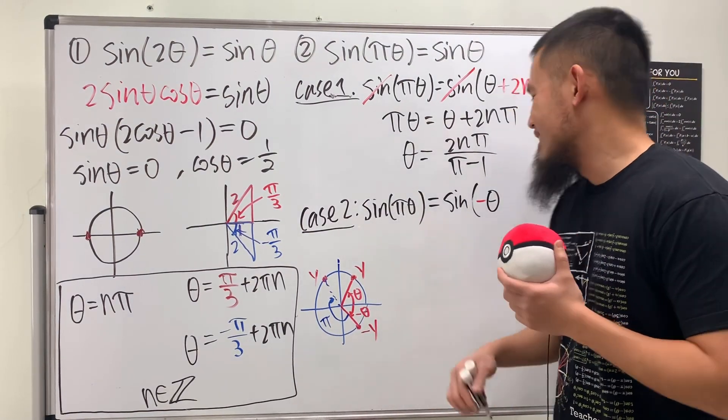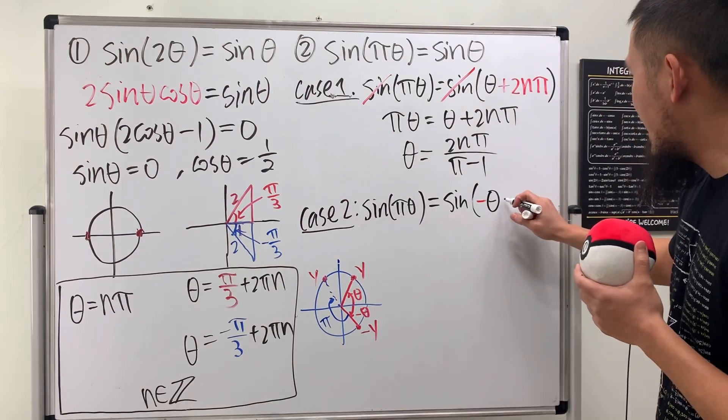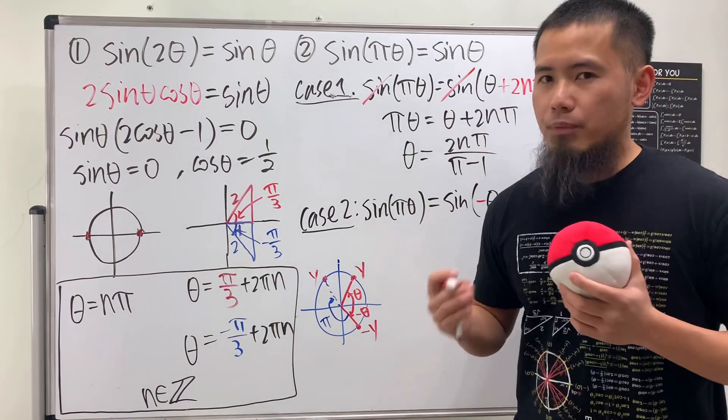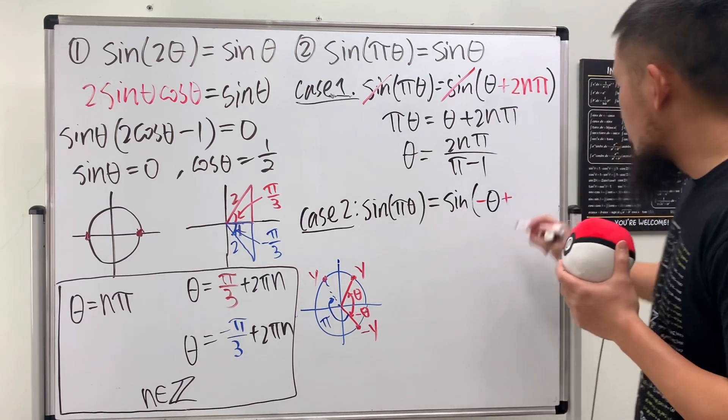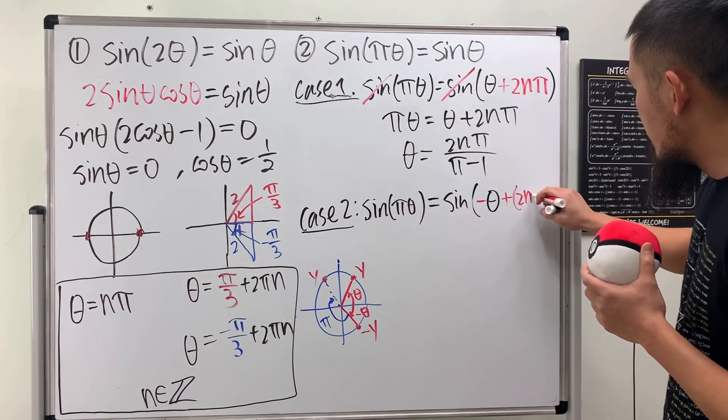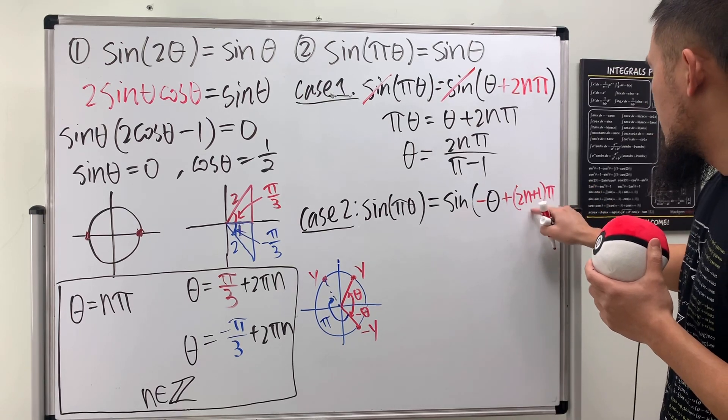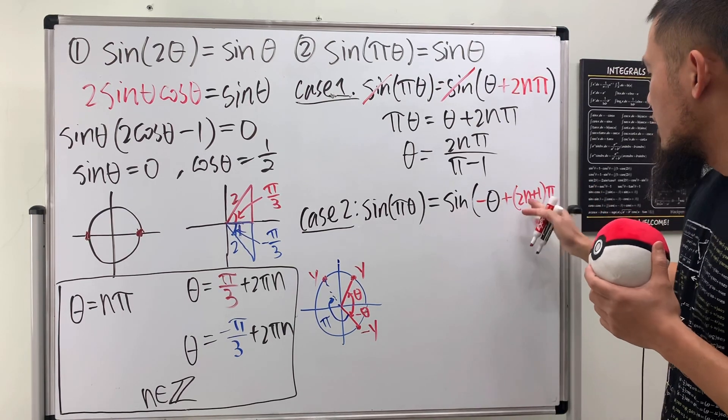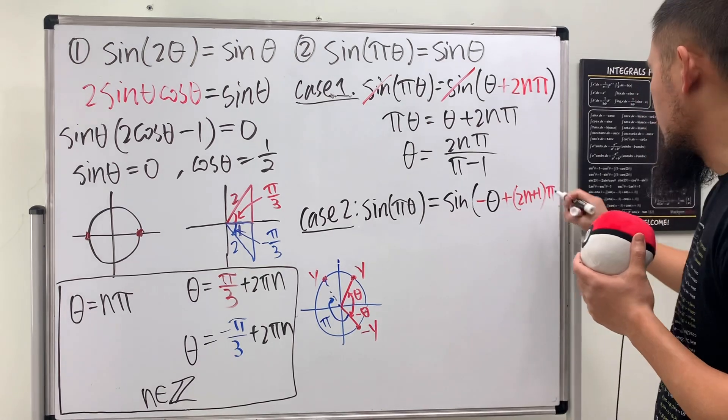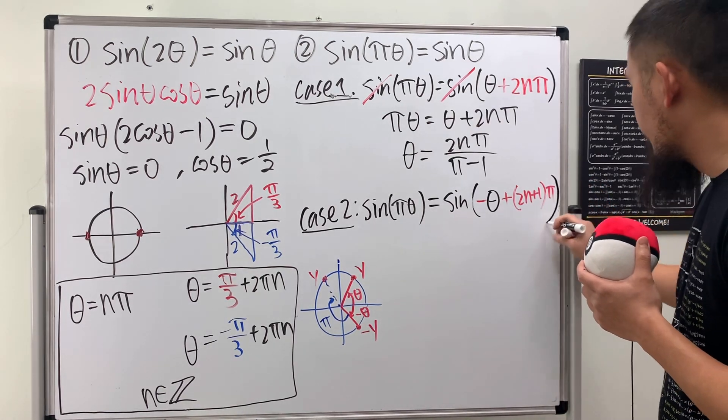So, yes, the deal is that we are going to add all the odd multiples of pi. So, we'll write it down as 2 n plus 1 or minus 1 doesn't matter. I'll just put down plus 1 because, again, n is an integer. So, I'll just do it like this. And then this is it. This expression is actually the same as sine theta.